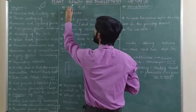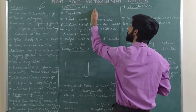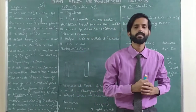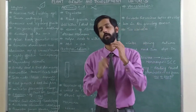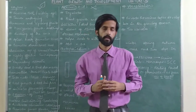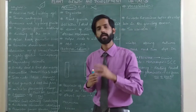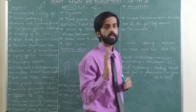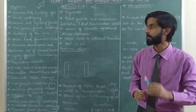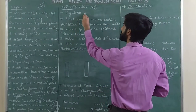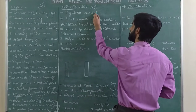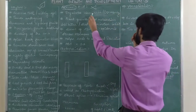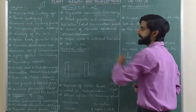Abscisic acid — the word 'scisic' comes from 'scissor,' meaning to cut. Therefore, abscisic acid is the plant growth hormone that will not promote growth; in fact, it will cut growth. Abscisic acid is a growth inhibitor — it inhibits growth. It regulates abscission and dormancy.